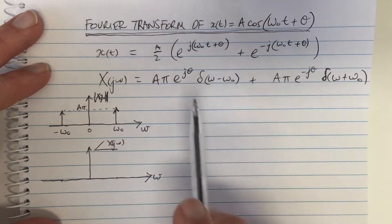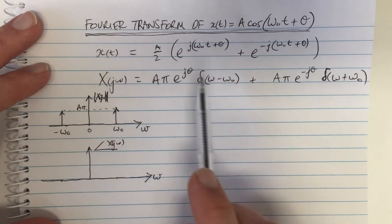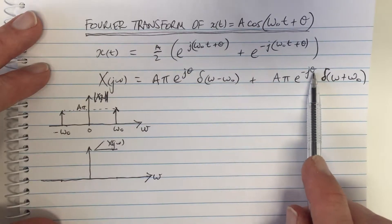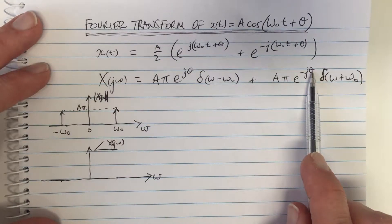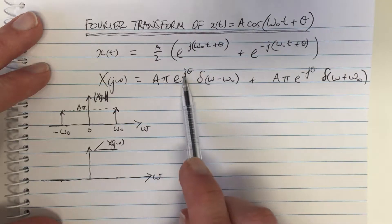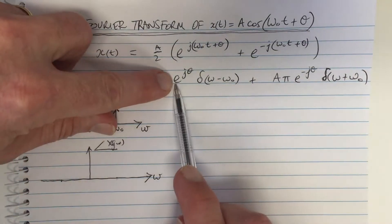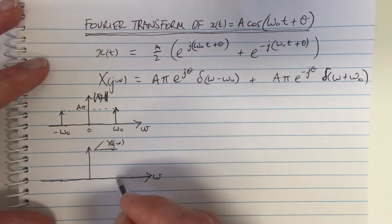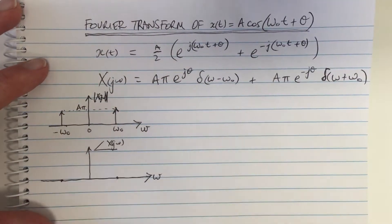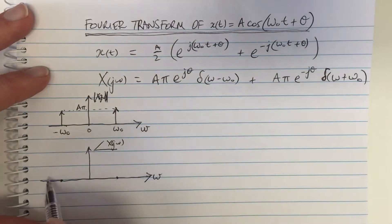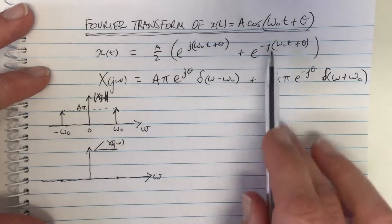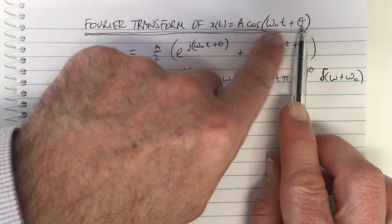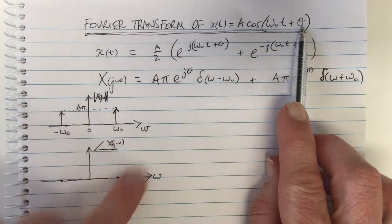If theta equals 0, then this phase is 0 and this phase is 0. The magnitude of this term is 1, but if theta equals 0, the phase is 0 — so this plot has zeros everywhere. That's if theta equals 0, which looking back, is just the cosine wave with no offset. This would be the Fourier transform.